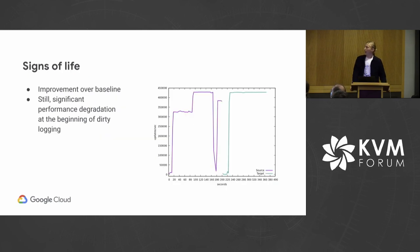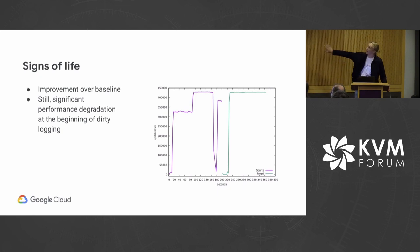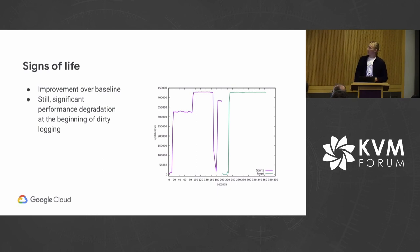With that, we reran our test workload and saw some signs of life. When we originally had a 30-second degradation of guest performance, we're now seeing just around three to six seconds. However, that massive cliff is still unacceptable. On these graphs, the purple side is the source machine and the green side is the target machine. We were still seeing a lot of degradation at the beginning of dirty logging and it wasn't entirely clear why.